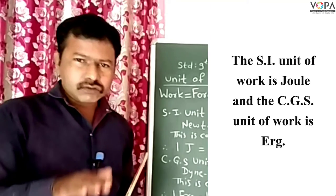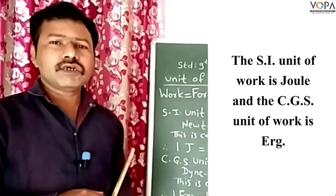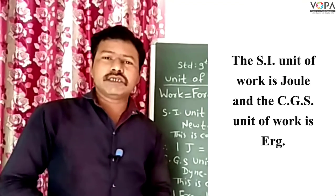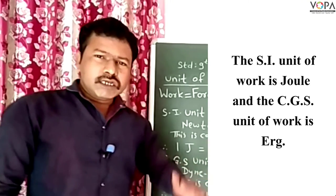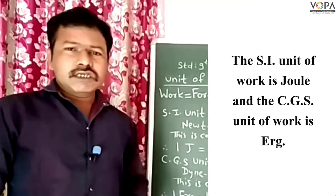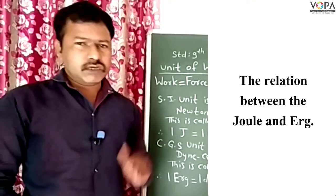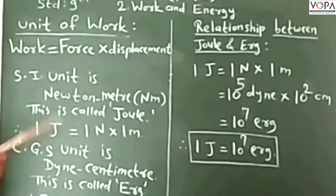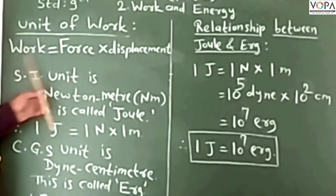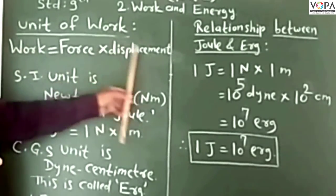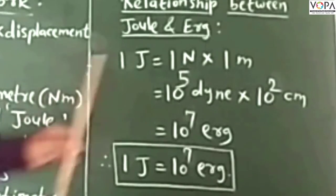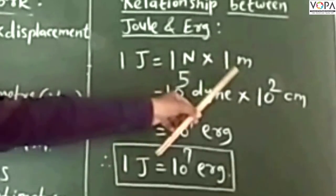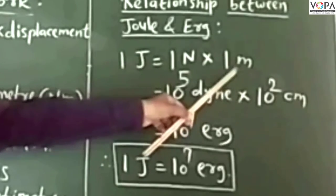So the SI unit of work is Joule and the CGS unit is erg. Now let us see the relationship between Joule and erg. According to the formula work is equal to force into displacement, we can write: 1 Joule is equal to 1 Newton into 1 meter.